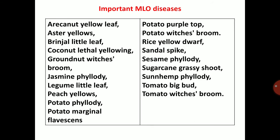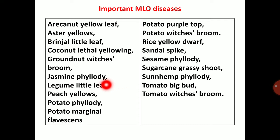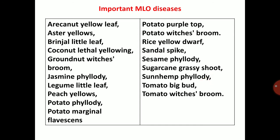Important MLO diseases — Candidatus Phytoplasma diseases include: Areca nut yellow leaf, Aster yellows, Brinjal little leaf, Coconut lethal yellowing, Groundnut witch's broom, Jasmine phyllody, Legume little leaf, Peach yellows, Potato phyllody, Potato marginal flavescence, Potato purple top, Potato witch's broom, Rice yellow dwarf, Sandal spike, Sesame phyllody, Sugarcane grassy shoot, Sunhemp phyllody, Tomato big bud, and Tomato witch's broom. These are all the diseases produced by MLO.